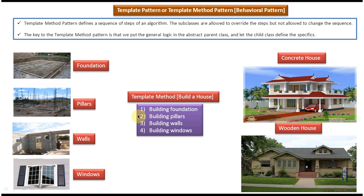So what I can do is I can define some kind of template method called 'build a house'. The template method defines what procedures I have to follow in order to build a house: step one is building a foundation, step two is building pillars, step three is building walls, step four is building windows. For both concrete houses and wooden houses, I have to follow these procedures — the only difference is materials will be different. So using this template method, I can build any kind of house: a concrete house, a wooden house, or a glass house.